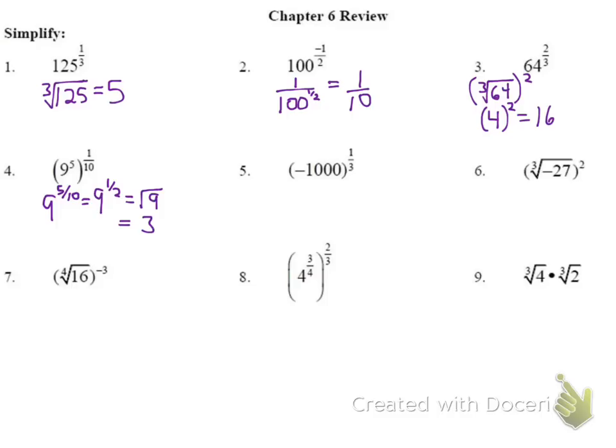Number 5: we have negative 1,000 to the 1/3. That negative does not mean we change it to 1 over 1,000 — it means the actual number negative 1,000. The 1/3 tells us it's the cube root of negative 1,000: what value cubed gives negative 1,000? Since it's negative and an odd root, the answer is negative 10.